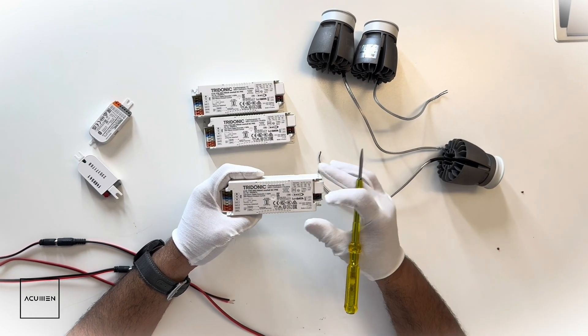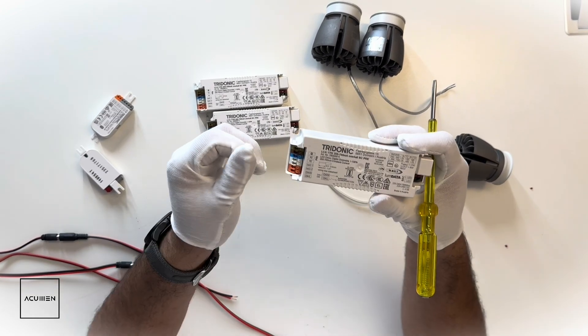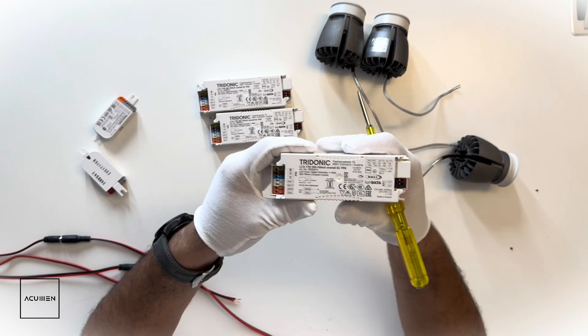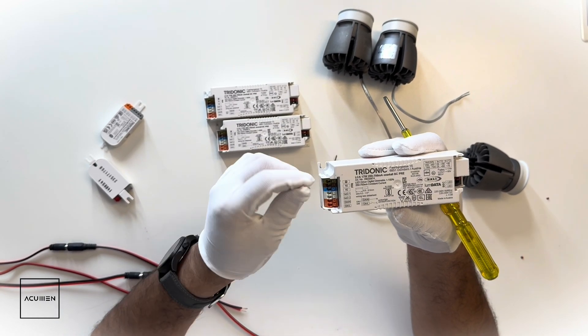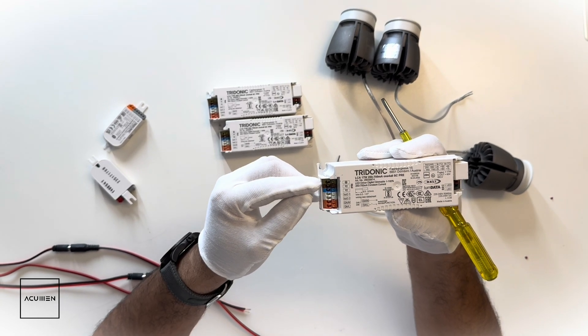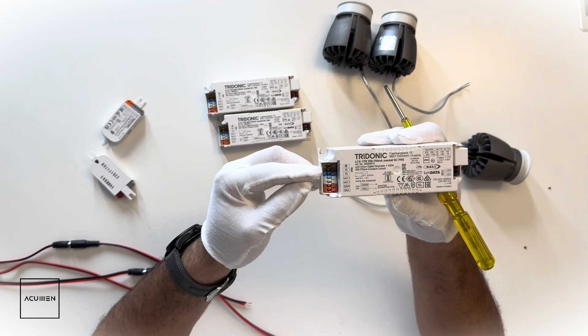But first we should know about the driver. This driver has a lot of points on the input side. Here the green is for earthing, brown is for phase, and the blue is for neutral. These two are for the input supply.